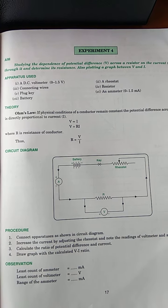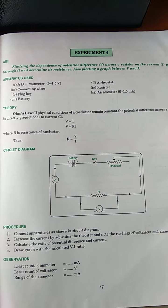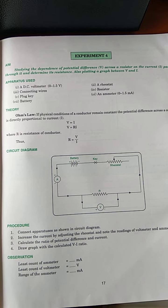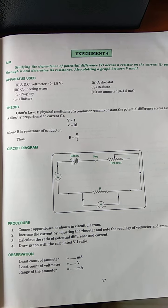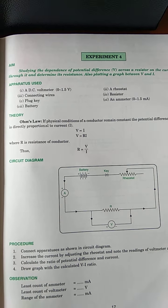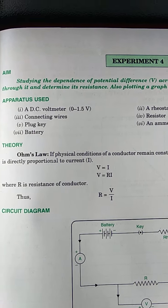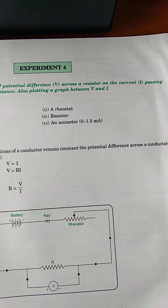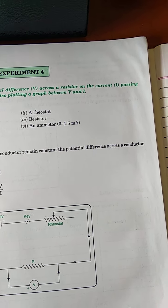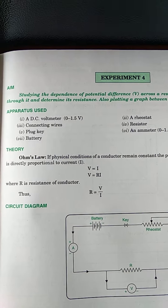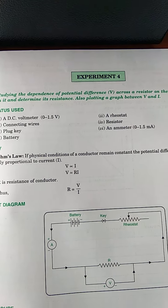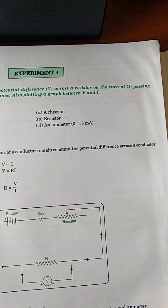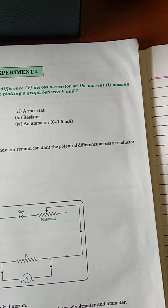Good morning students. Today we are going to discuss a very important practical of class 10th. So what is the aim of this experiment? This is studying the dependence of potential difference V across a resistor on the current I passing through it and determine its resistance. Also plotting a graph between V and I.